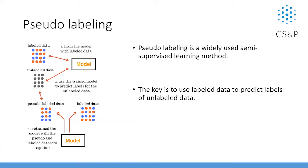The next step is how to label unlabeled data. We use pseudo-labeling, a widely used semi-supervised learning method — not a unique method proposed by our group, we just apply it. The key is to use labeled data to predict labels for unlabeled data. The method is straightforward: design a model, train it with labeled data, predict labels for unlabeled data to get pseudo-labeled data, then combine pseudo-labeled and labeled data together to retrain the model. That's the basic idea.